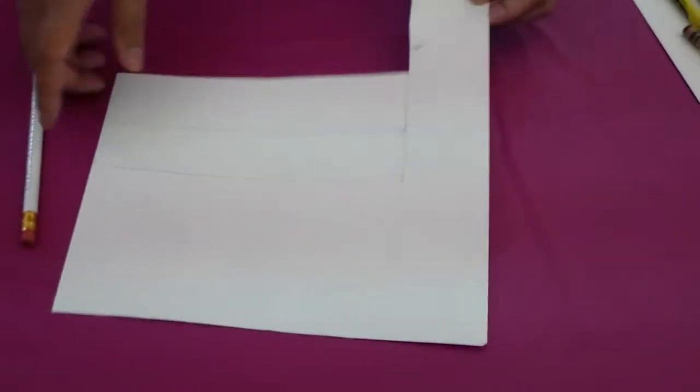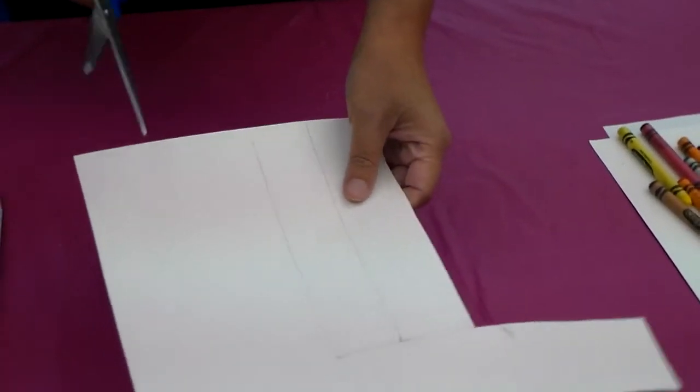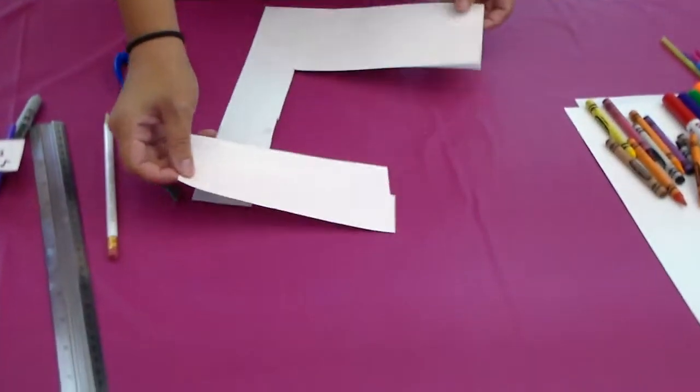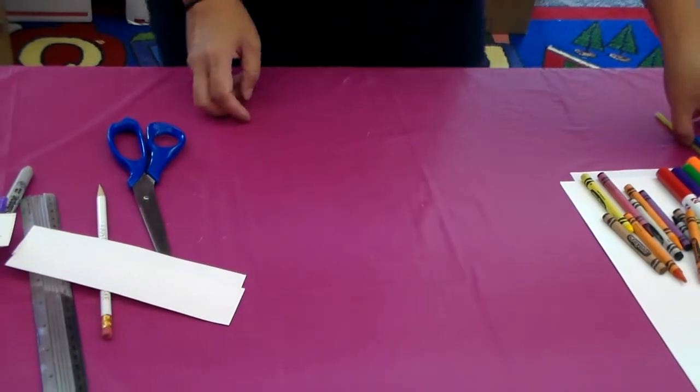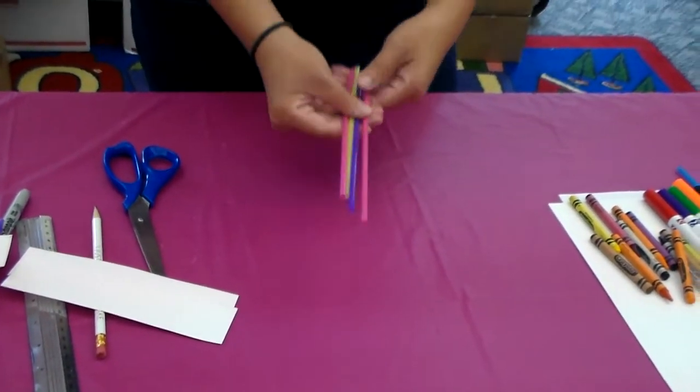Okay so you need one strip from the back side. Take your scissors and cut it. The next thing we're going to do is we're going to put aside our construction paper and we'll take our straw.